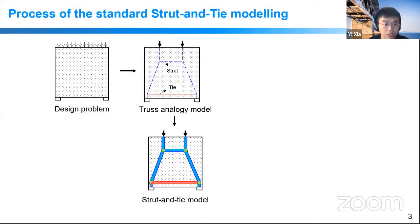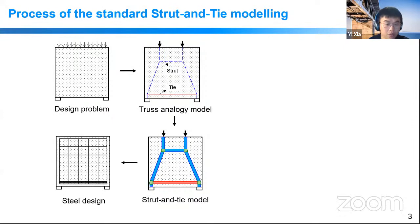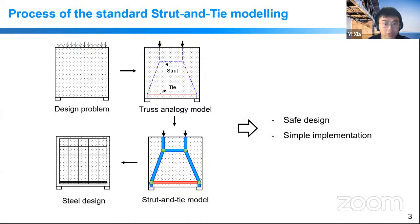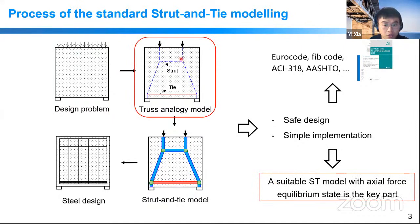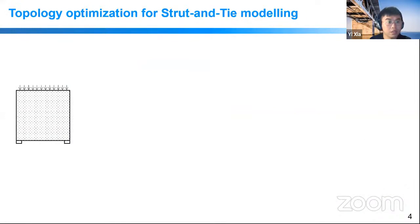The standard strut-and-tie modeling method has three main steps: first, create a truss-like system representing the load-transfer mechanism and calculate equivalent forces; second, determine steel usage and perform stress checking for the strut; third, design practical steel layouts based on the created model. This simple lower-bound design is preferred by engineers and is widely implemented in various design codes. However, finding a suitable truss model with the actual force equilibrium state is the most important and still unsolved part.